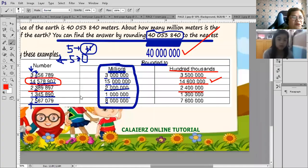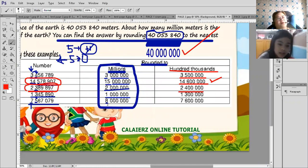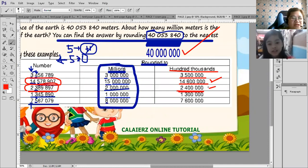It becomes 2,400,000. That's the main number. Because the 8 is greater than 5, so the 8 will add up to the 3, and the 3 will turn into 4. Very good. So that makes, or that gives you 2,400,000. Very good. That's the answer.